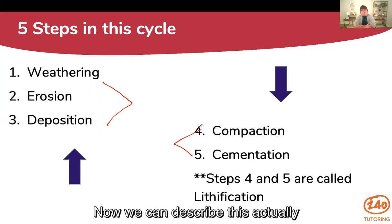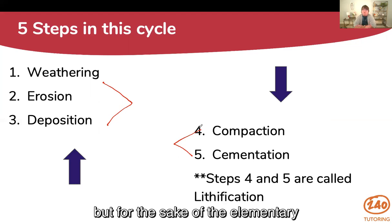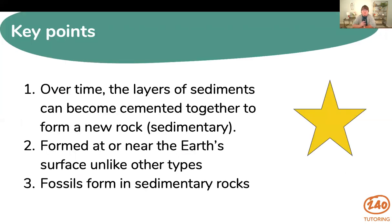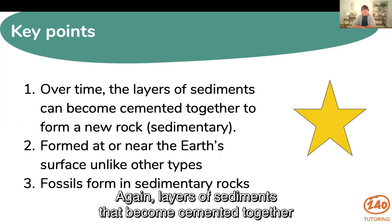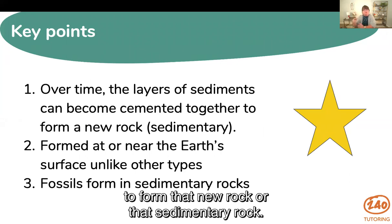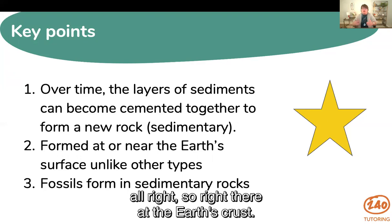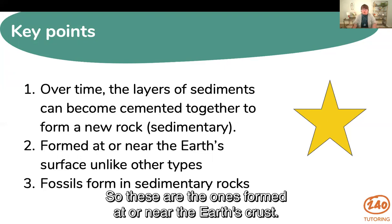We can describe this in more technical terms and in greater depth, but for the sake of elementary and middle school science content, this should be sufficient for what you need to know. Key points to remember: layers of sediments become cemented together to form sedimentary rock. They're formed at or near the earth's surface — right at the earth's crust. Metamorphic and igneous rocks are formed much deeper, so sedimentary rocks are the ones formed at or near the earth's crust.